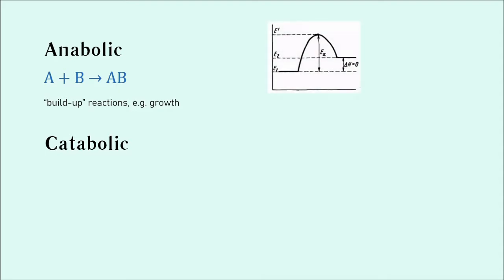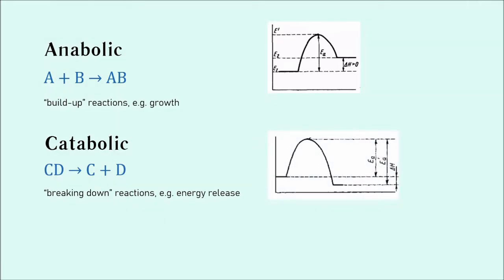Anabolic reactions are also endothermic. That means that they take in energy. And if you're ever asked to identify an anabolic reaction from a graph, it will be like this. This is an energy profile diagram for an endothermic reaction, where you can see that the reagents have less energy than the products. In other words, energy has been taken in. Catabolic reactions, on the other hand, will be exothermic and have this general format: CD gives C plus D. We have one reagent that is split into two products, or several products. So these are breaking down reactions. For example, energy release or digestion.